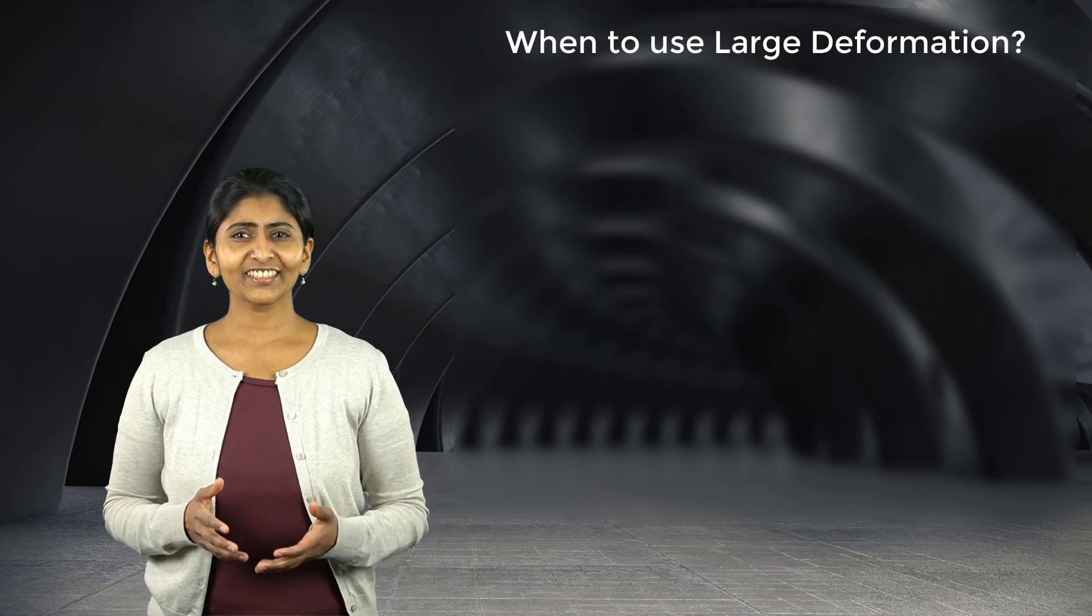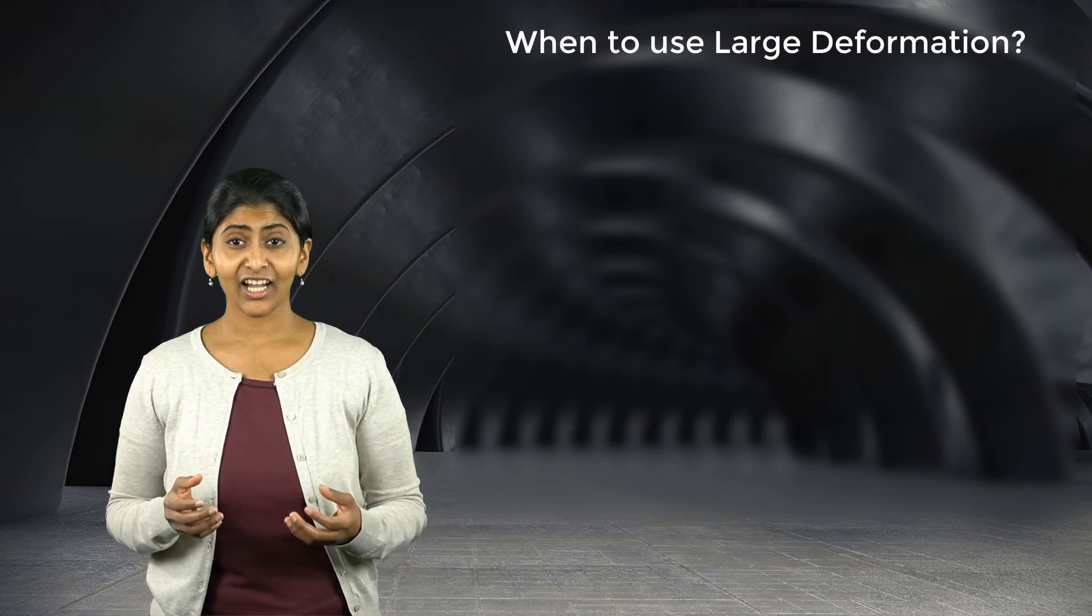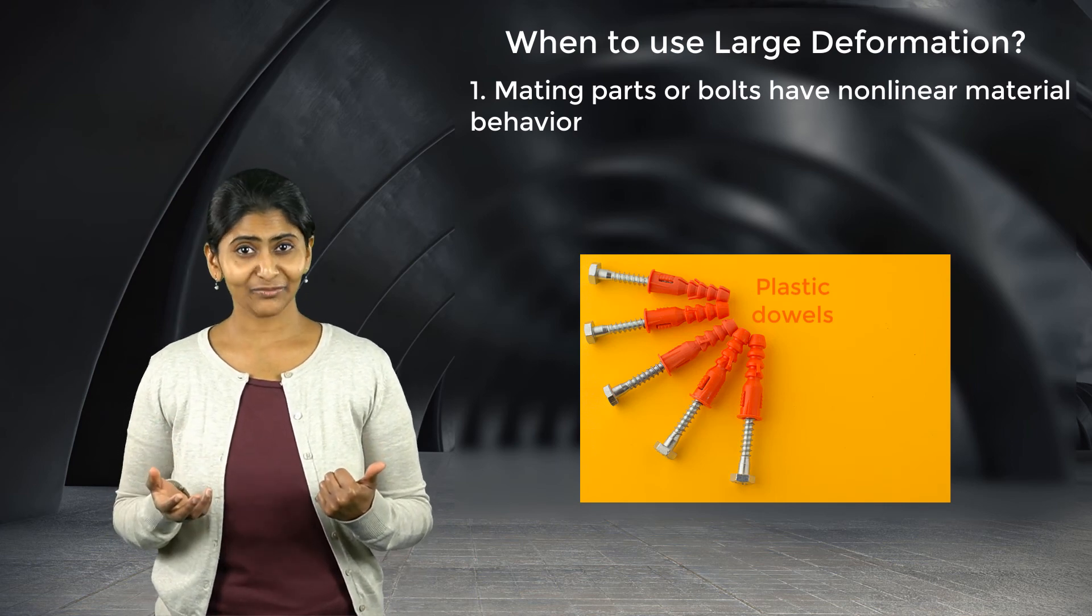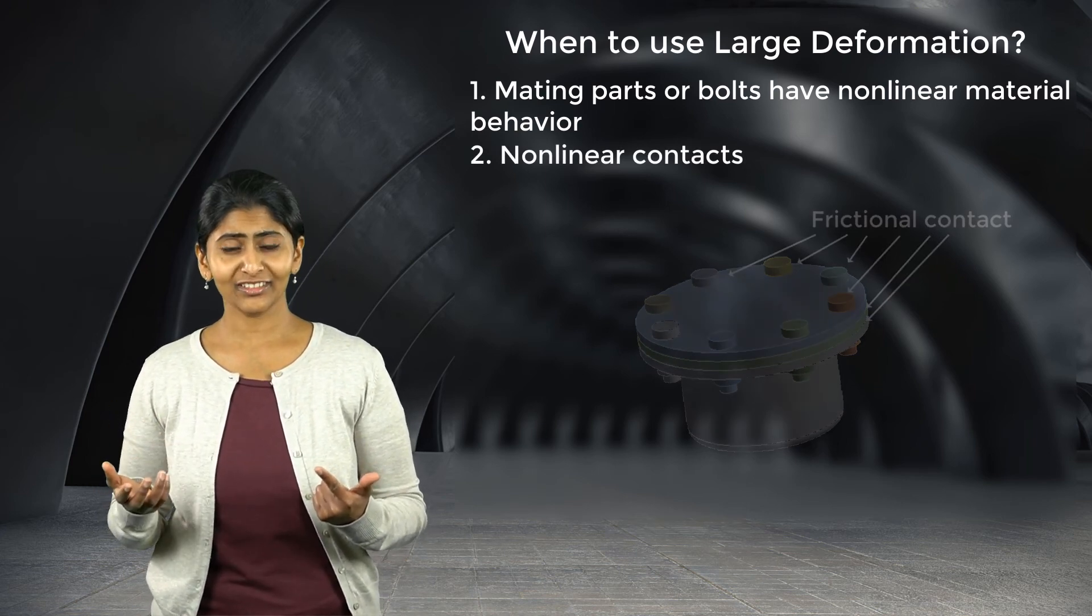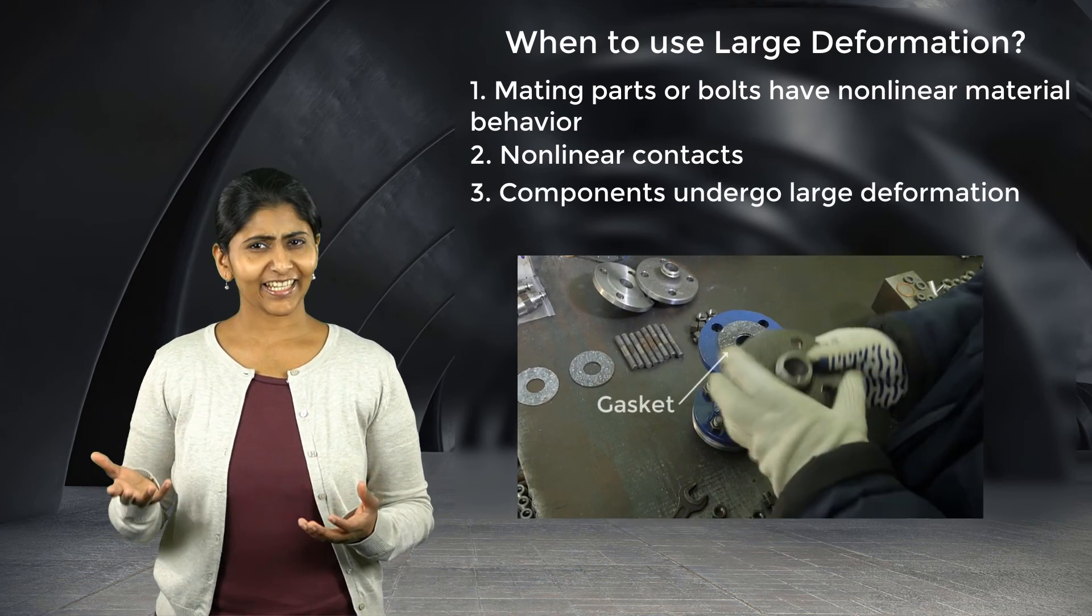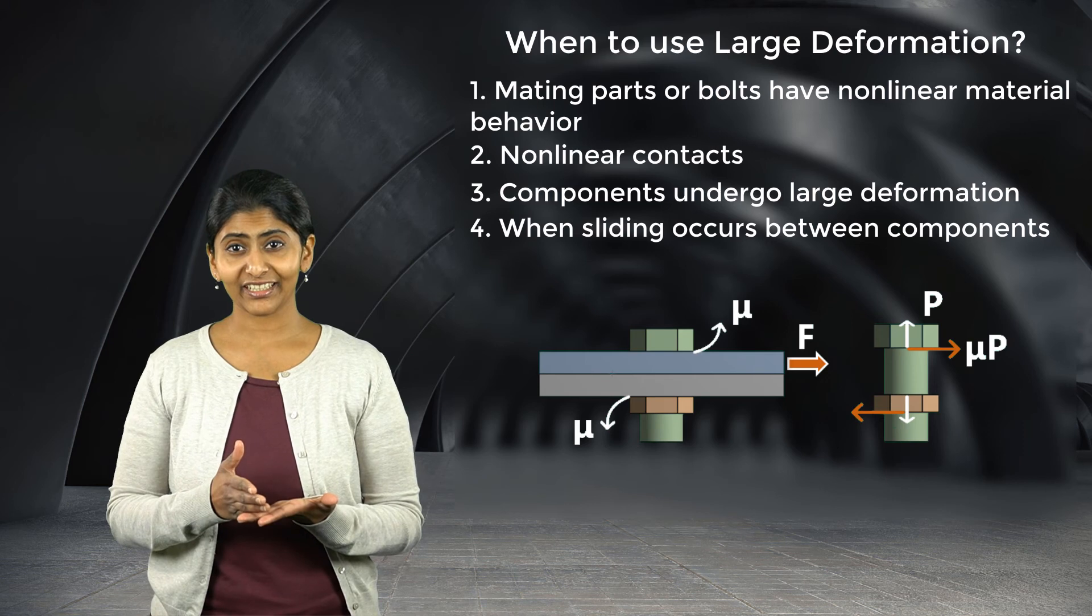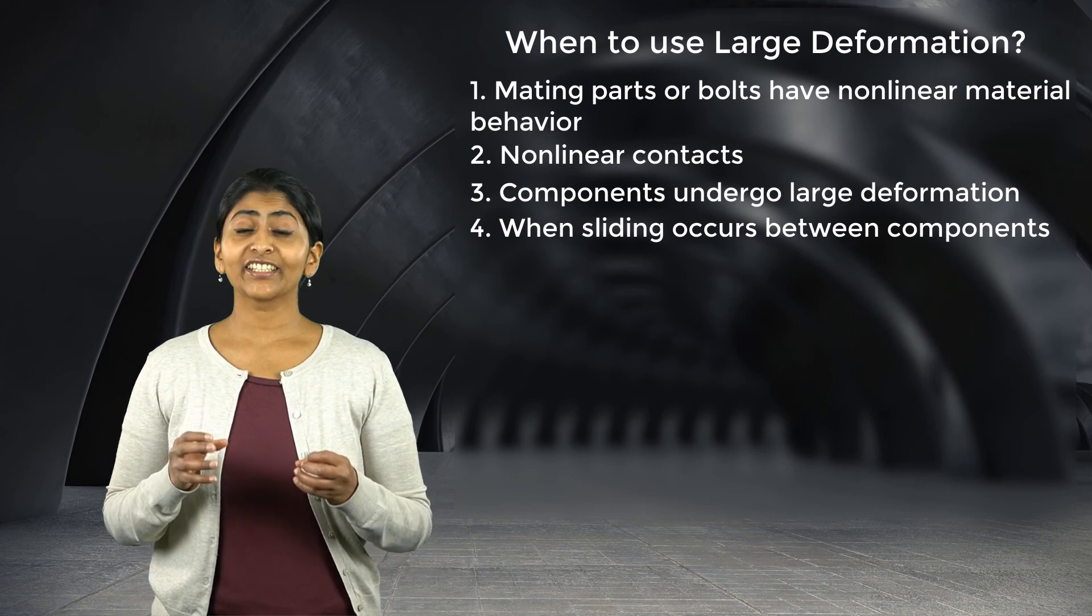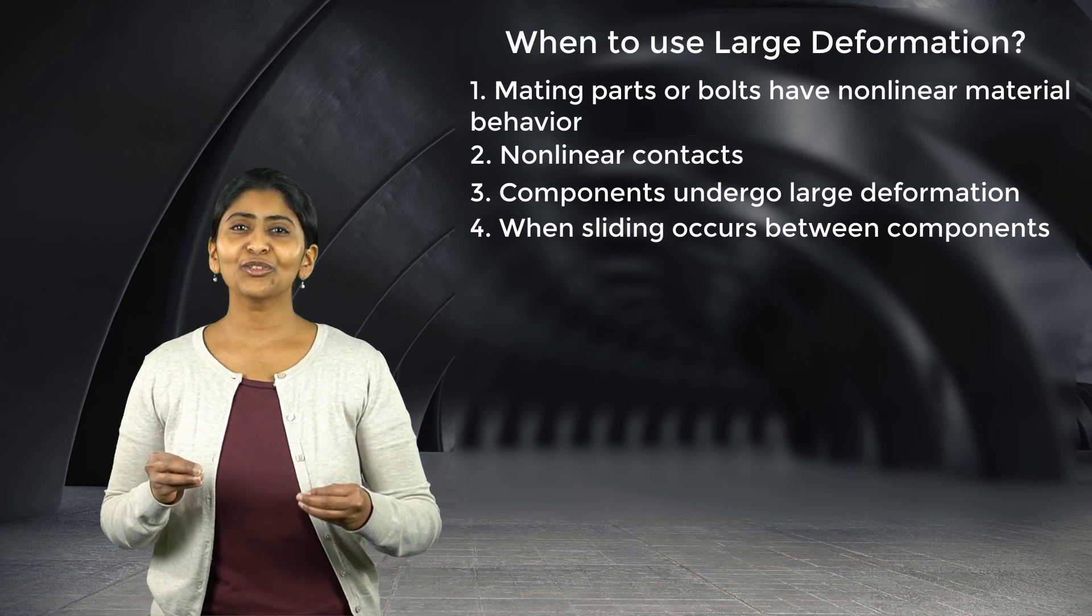A few instances in case of bolted joints where it's recommended to use large deformation are: first, when the mating parts or the bolts have non-linear material behavior. Secondly, when there are non-linear contacts such as frictional contacts in the model. Third, when some of the parts undergo large deformations such as gaskets and seals. Or finally, when sliding of the components is of interest such as in case of shear joints. If it's not clear whether large deformation is needed for an application, it is recommended to always use large deformation.